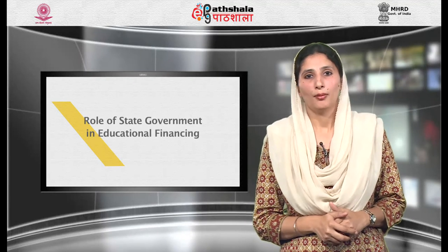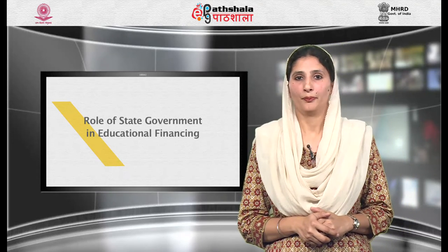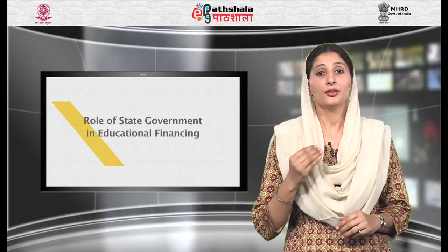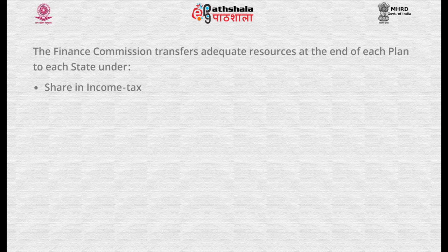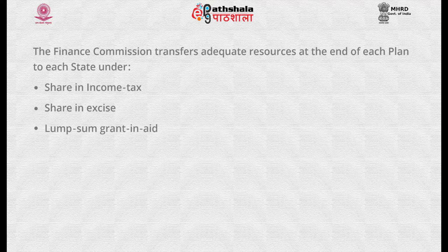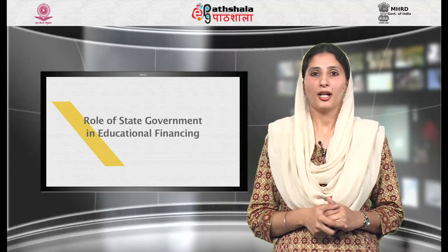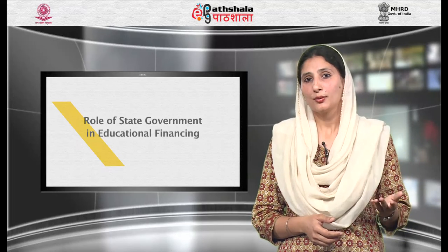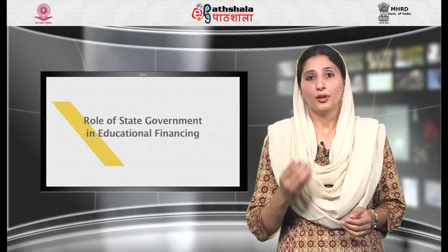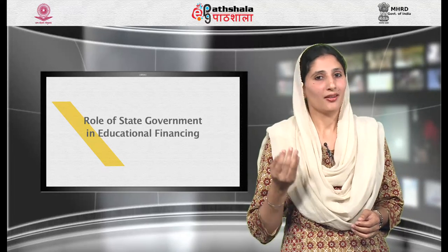Now we will learn about the role of state governments in educational financing. The Finance Commission transfers adequate resources at the end of each plan to each state under: firstly, share in income tax; secondly, share in excise; and thirdly, lump sum grant-in-aid. The state recognizes schools and other institutions run by private bodies in accordance with set rules and regulations, provides them with suitable aids and grants, and also gives financial aid to universities functioning in the state.